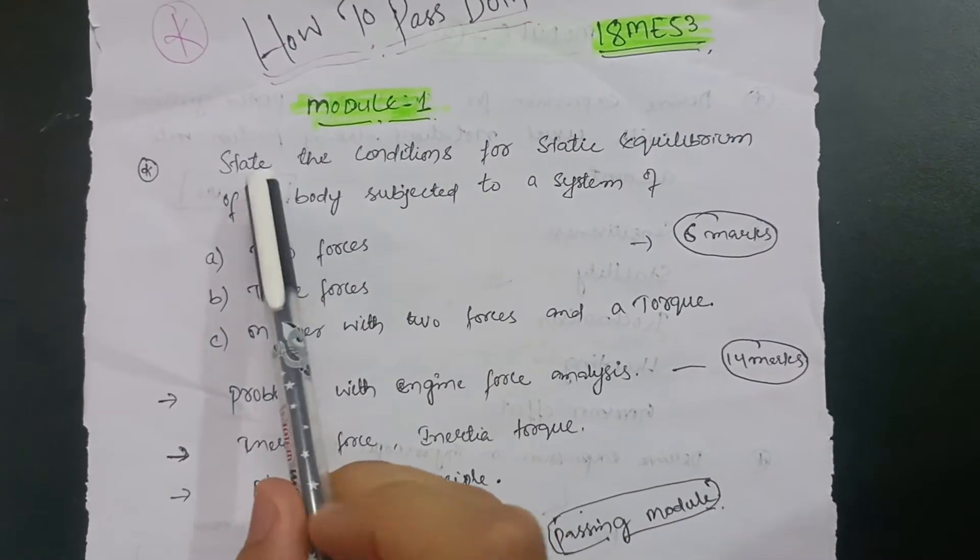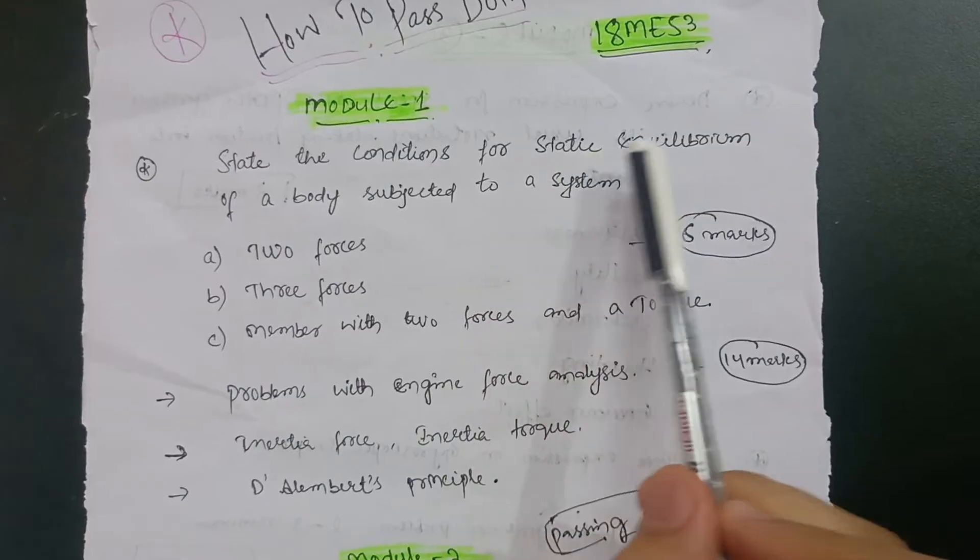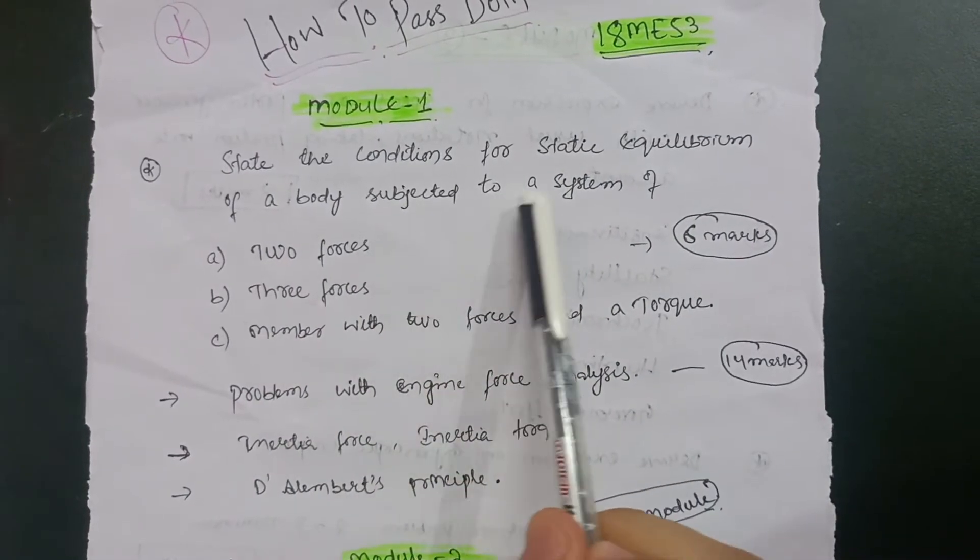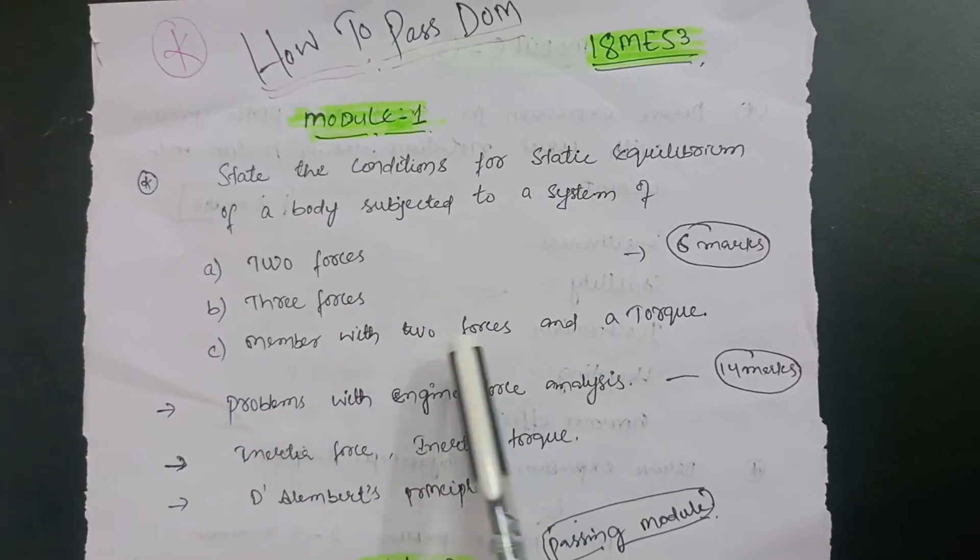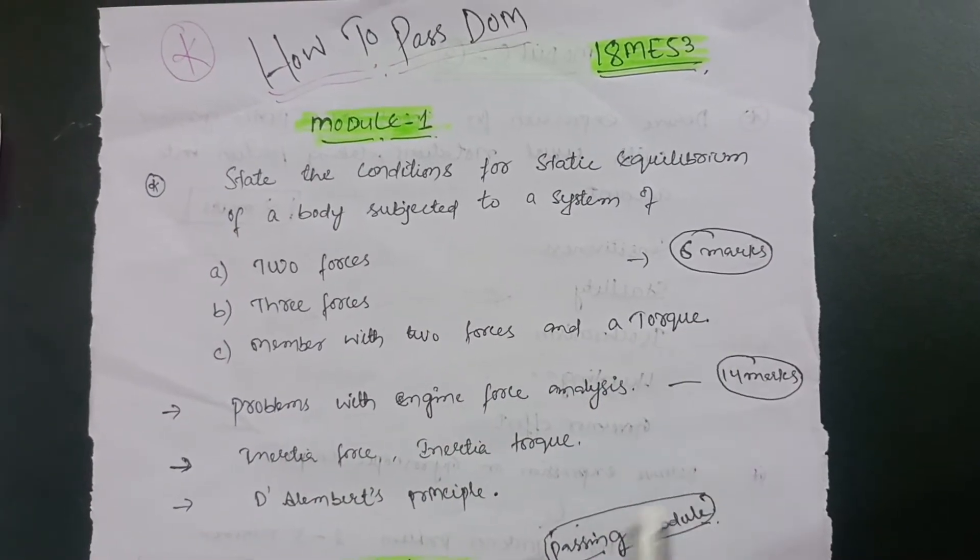In Module 1, there are some theory concepts. A definite question: state the conditions for static equilibrium of a body subjected to a system of two forces, three forces, and member with two forces and a torque.